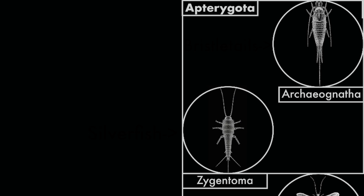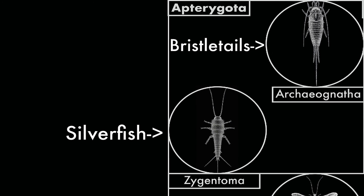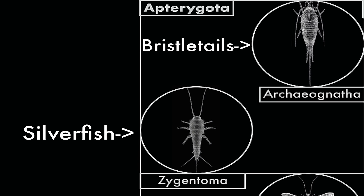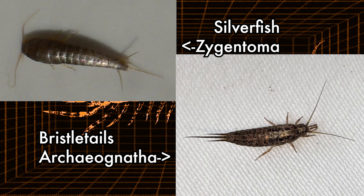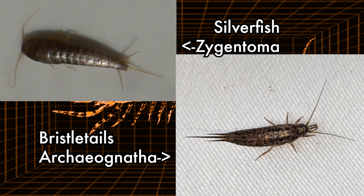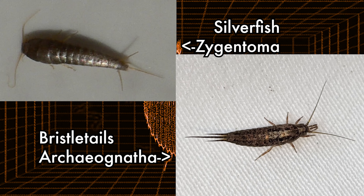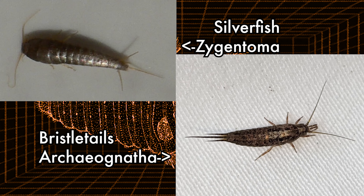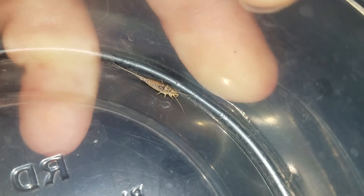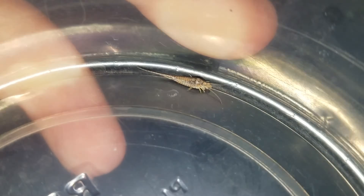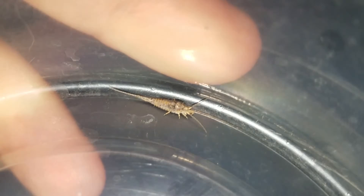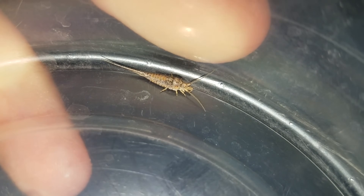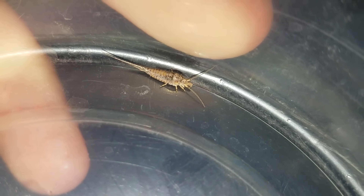The term bristletails has been used to describe both the orders Archaeognatha and Zygentoma due to their three tail-like appendages. However, it's more accurate to reserve bristletails for Archaeognatha and to refer to Zygentoma as silverfish or firebrats. Although these orders fill a similar niche, they have several key and important differences, which I'll explain before diving into the ecology of bristletails.